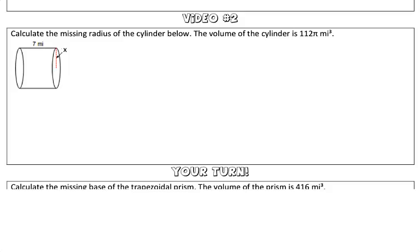As we start any problem, we're going to set up our volume formula. The volume of a cylinder is equal to the area of the base, which we denote with capital A, times the height, or the distance between the two bases.